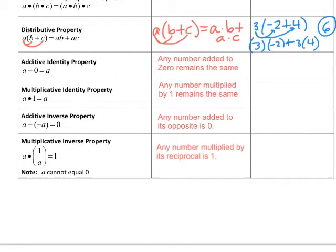You can stop this video to write down the description of the last four properties: the additive identity property, the multiplicative identity property, the additive inverse property, and the multiplicative inverse property. So we have two inverse properties and two identity properties. Let's go ahead and give a couple of examples of these.